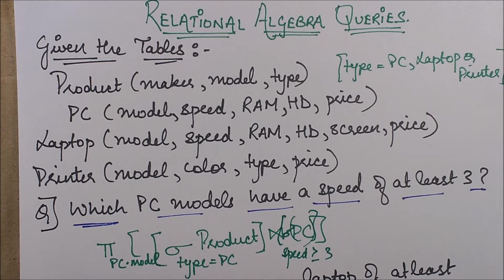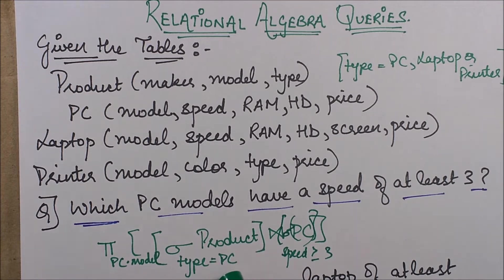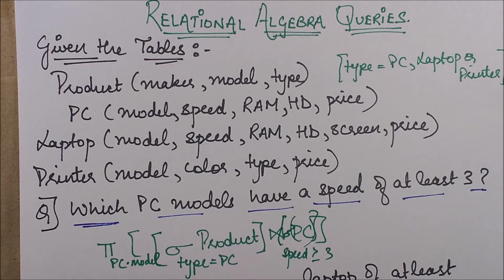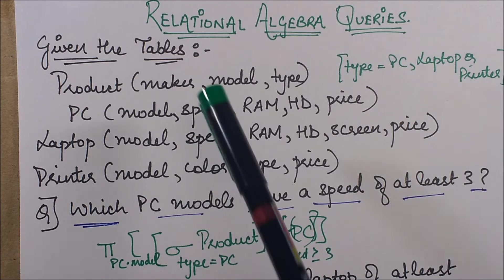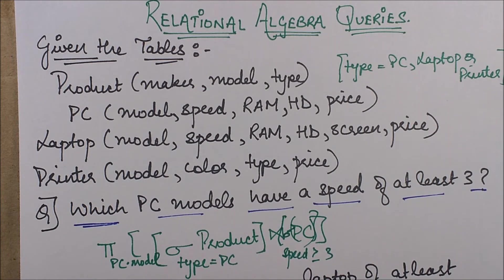The condition being that type equals PC, because I just want to join those tuples which belong to the category of PCs. When I join this, I'll get the makers information also and the model information also. But did we require the makers?